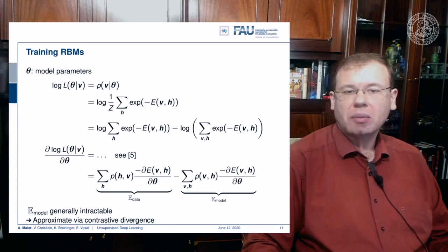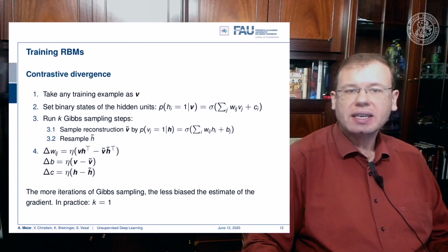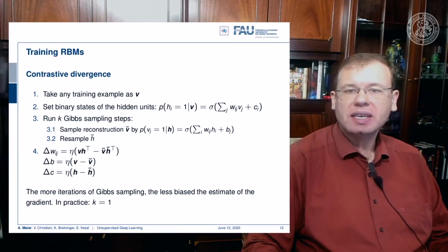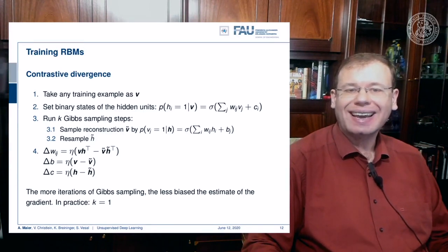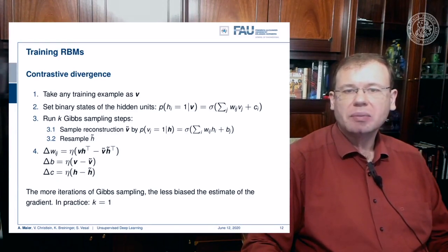Generally the expected value of the model is intractable, but you can approximate it with the so-called contrastive divergence. Contrastive divergence works as follows: take any training example as V, then set the binary states of the hidden units by computing the sigmoid function of the weighted sum over the Vs plus the biases. This gives the probabilities of your hidden units. Then you run k-Gibbs sampling steps, sampling the reconstruction V̂ by computing the probabilities of V given H using the sigmoid function over the weighted sum of H_i plus the biases.